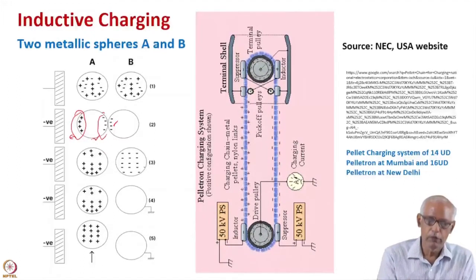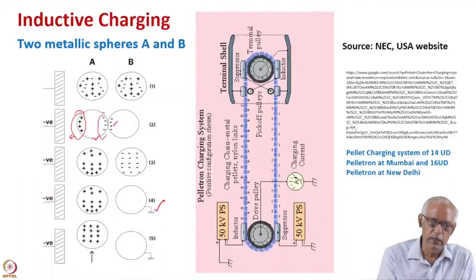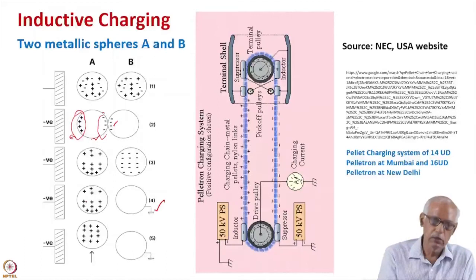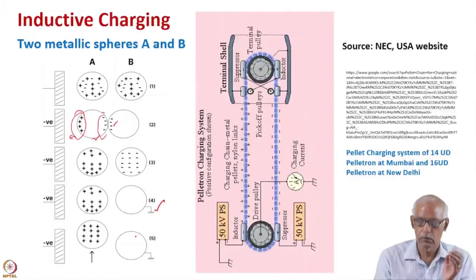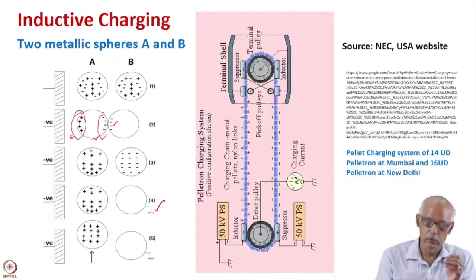If you ground this second metallic sphere, which is condition number four, then the negative charge will go to the ground. But negative voltage is still applied to the inductive electrode, so the positive charge will remain on the first sphere and be uniformly distributed. The first sphere, representing the pellet chain, is moving with a speed, while the second sphere is stationary, representing the pulley, which is now grounded.